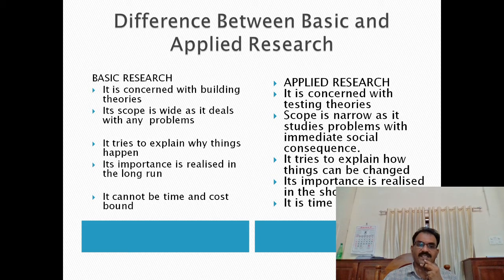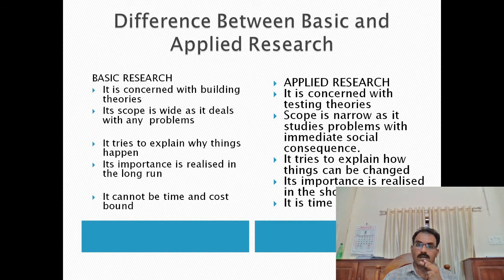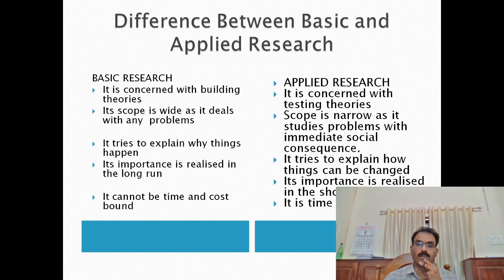The next difference is that basic research tries to explain why things happen, while applied research tries to explain how things can be changed — it aims to find solutions to problems. Basic research is realized in the long run, whereas applied research is realized in the short run. Also, for basic research we cannot decide in advance the time and cost required, but for applied research, time and cost are decided in advance.